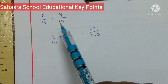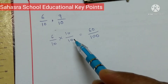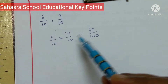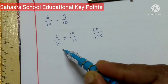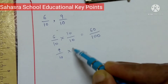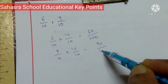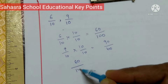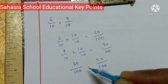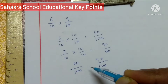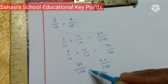Here the denominators are the same, so we multiply numerator and denominator by 10. 6 by 10 becomes 60 by 100, and 9 by 10 becomes 90 by 100. So between 60 by 100 and 90 by 100, the rational numbers are 61 by 100, 62 by 100, all the way up to 89 by 100.